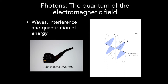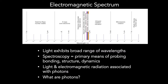Photons — the quantum of the electromagnetic field. Why are we so interested in the electromagnetic spectrum? Visible light is part of the electromagnetic spectrum, a part we think of as being very important because we can see it. But there are all kinds of light ranging across a vast array of wavelengths, and these are associated with a vast array of photon energies.